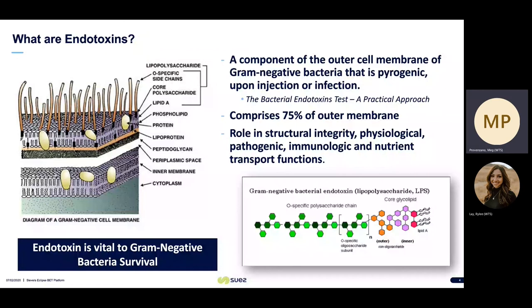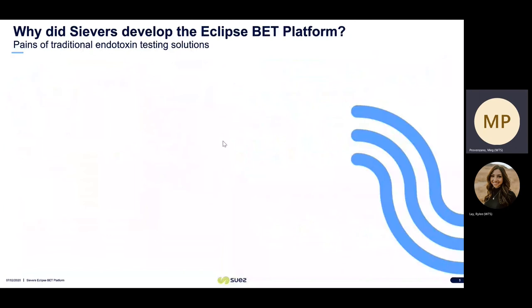So what exactly are endotoxins? Endotoxin comes from the outer cell membrane of gram-negative bacteria and it's pyrogenic, meaning it can cause illness when it comes into contact with blood or cerebral spinal fluid. The endotoxin, or lipopolysaccharide, comprises 75% of the outer membrane. It plays a critical role in structural integrity, physiological, pathogenic, immunologic, and nutrient transport functions of the gram-negative bacteria, and is essential for gram-negative bacterial survival.